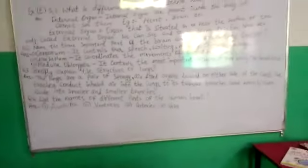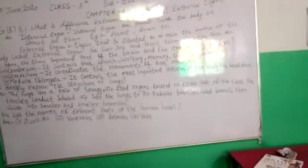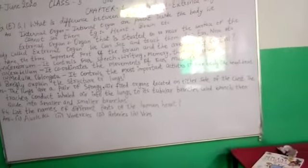Second, Cerebellum. It coordinates the movement of our muscles. Third, Medulla Oblongata. It controls the most important activities of our body like heartbeat.